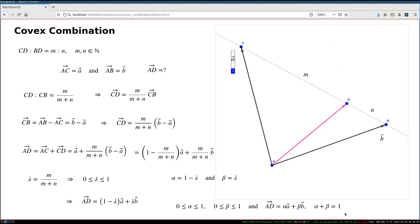And when you allow to do that, when you allow to freely take any number between 0 and 1 for lambda, this point D will trace this entire segment between C and B. This point D will trace this entire segment between C and B.